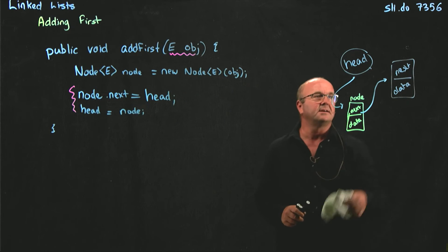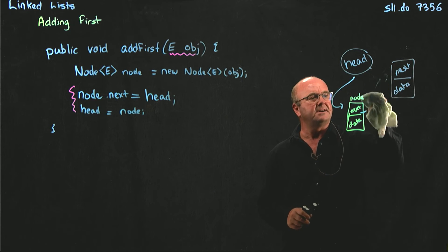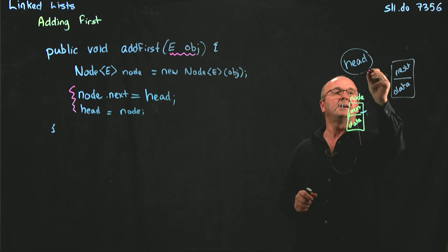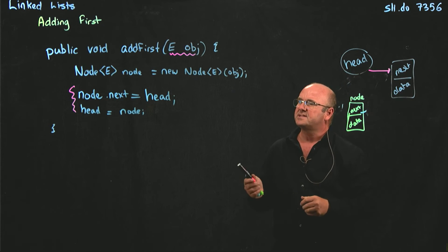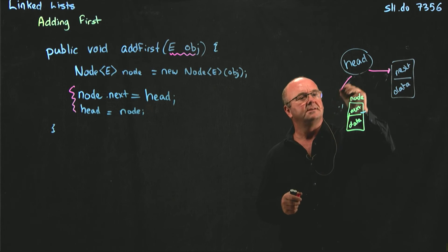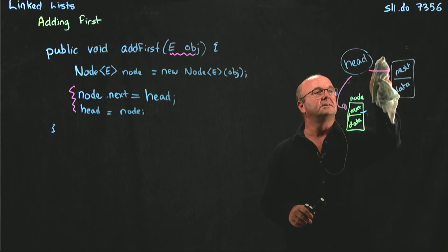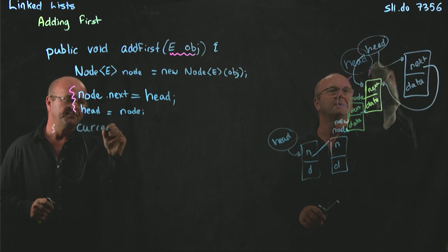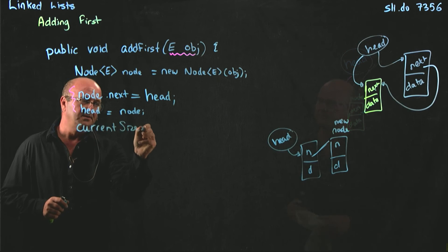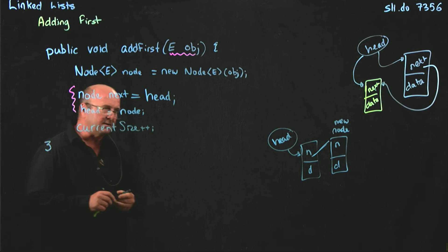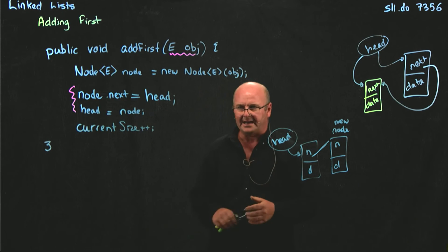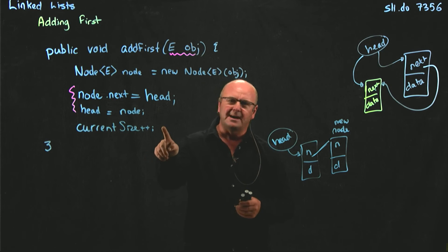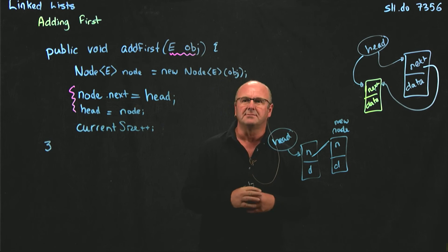And the other thing that's really critical is to get the order of these two lines correctly. If you don't do that, if you get those two lines the wrong way around, you're going to start off with your head pointing to your original node. If you set head to point to your new node first, you'll break this link and this will get garbage collected away. So current size gives you constant time access to the size of the linked list, except you have to remember to increment it when you add something and decrement it when you remove something.